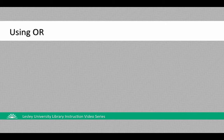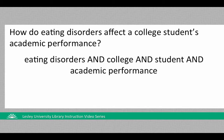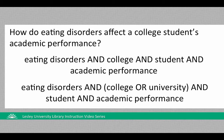Another trick for improving your keyword searches is to use OR. You'll want to use OR when you want to search for similar keywords. Let's look at the second research question again. The original keywords were eating disorders AND college AND student AND academic performance. That's a pretty good keyword search, but maybe you also want to search for articles about university students, not just college students. You could use OR to search for both at the same time. The keyword search would then look like: eating disorders AND (college OR university) AND student AND academic performance.